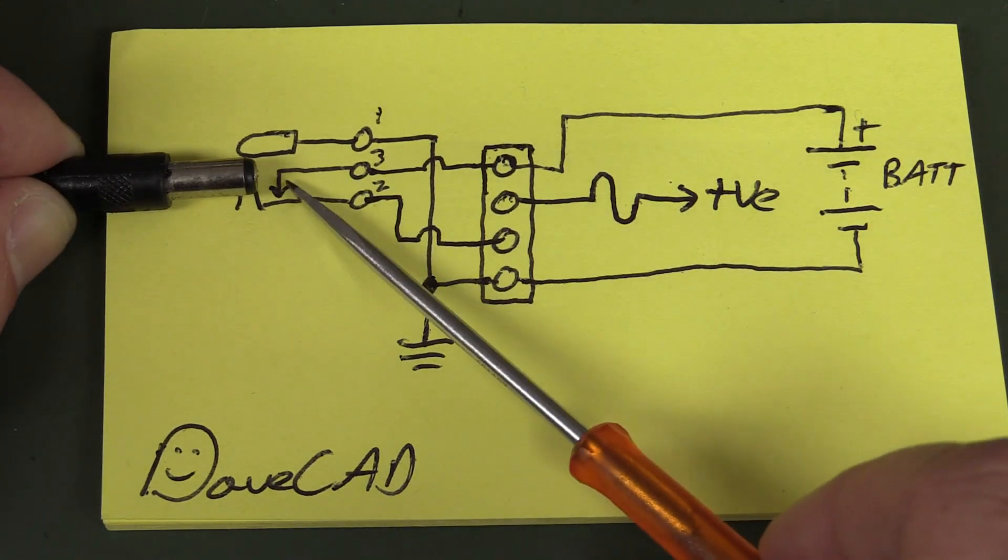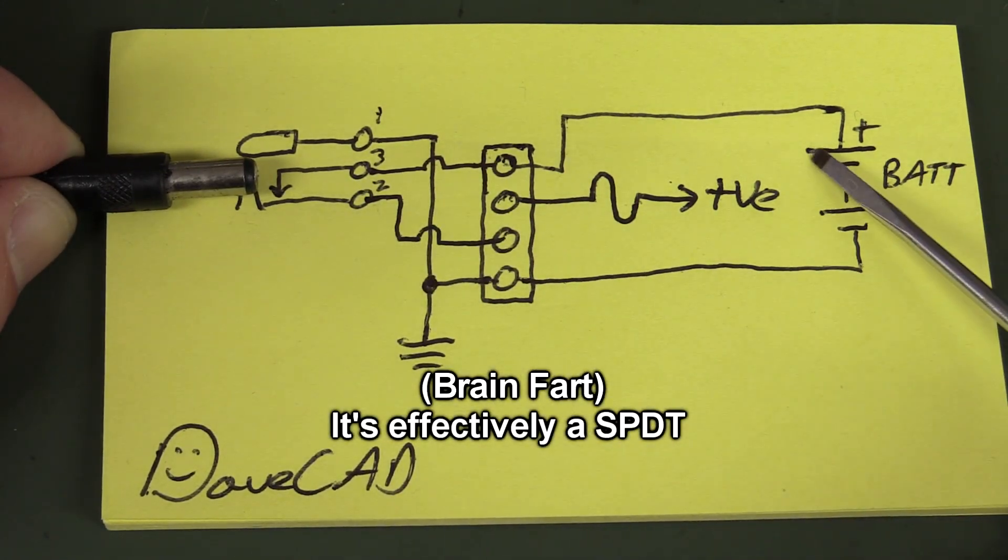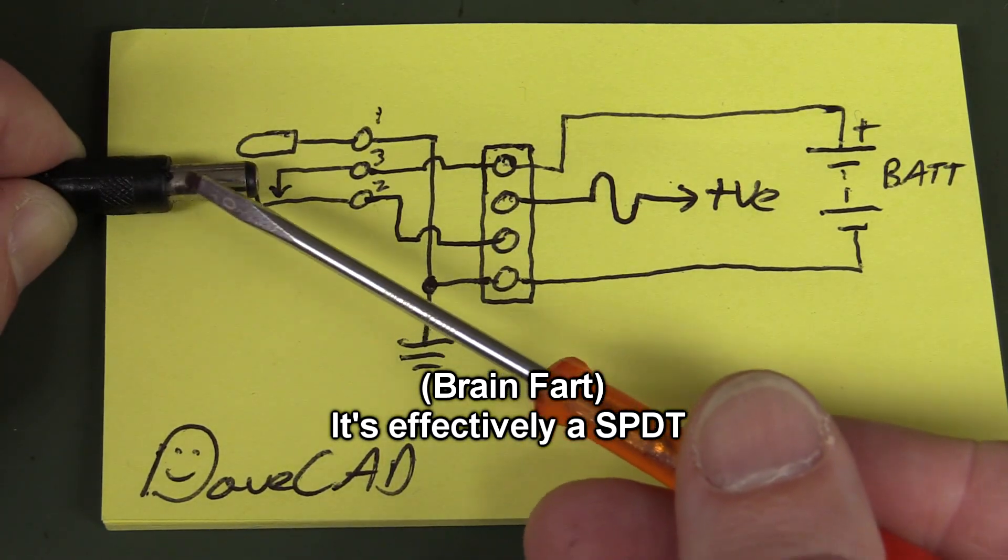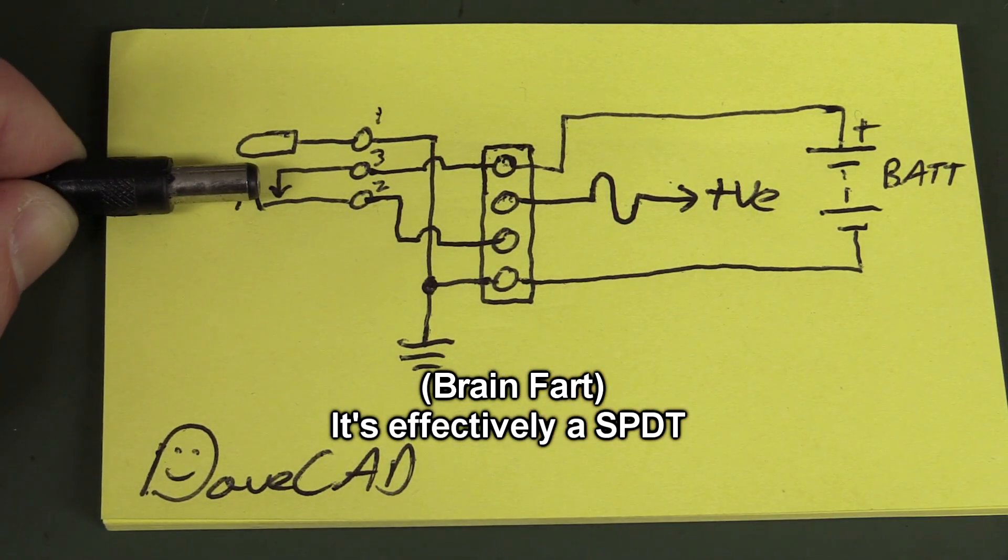So it's effectively a double pole single throw switch that selects between either the battery or the external DC jack. Brilliant.